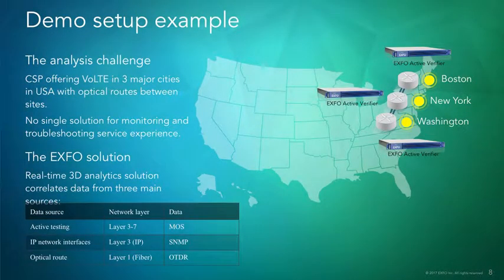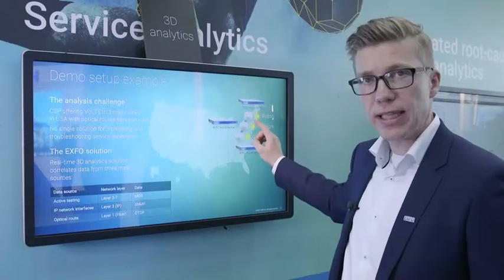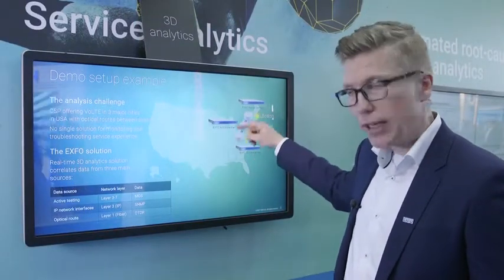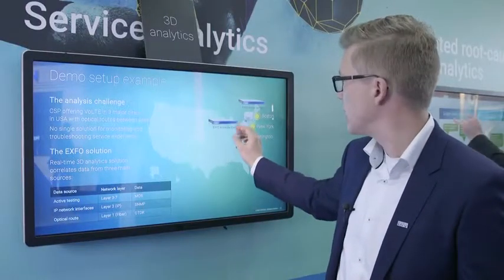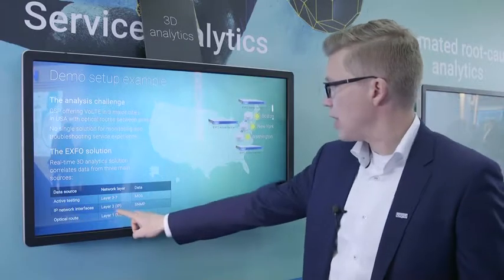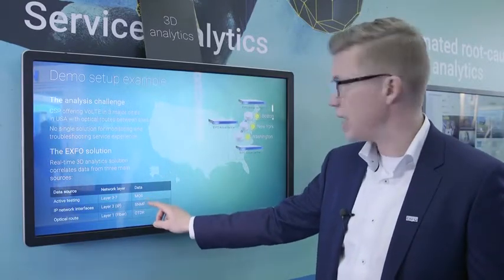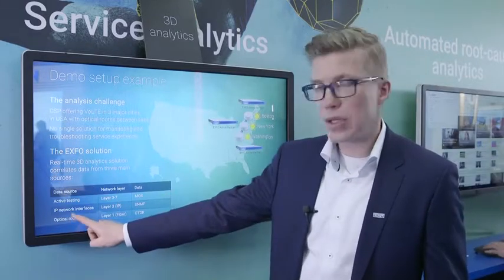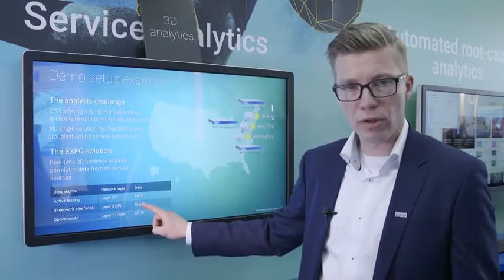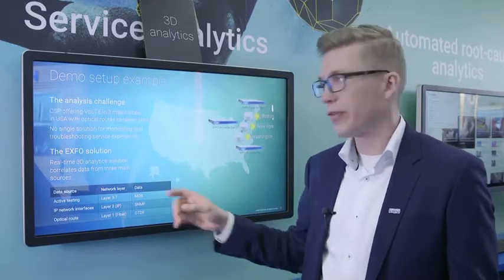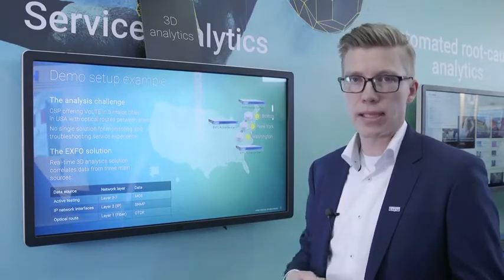We have a simplified demo setup here. We have an imaginary CSP operating on the East Coast of the US, providing voice over LTE service to three major cities: Boston, New York, and Washington, connected via a fiber network. We have three verifiers running active tests across the network to ensure service quality for voice over LTE. We are collecting data directly from layer 3 switches via SNMP — this is interface-level performance data. Finally we have NQMS fiber, our fiber network monitoring solution to test layer one connectivity by running OTDR tests over the fiber network. We use the 3D analytics solution to collect all of this data in real time, then visualize it and make conclusions.